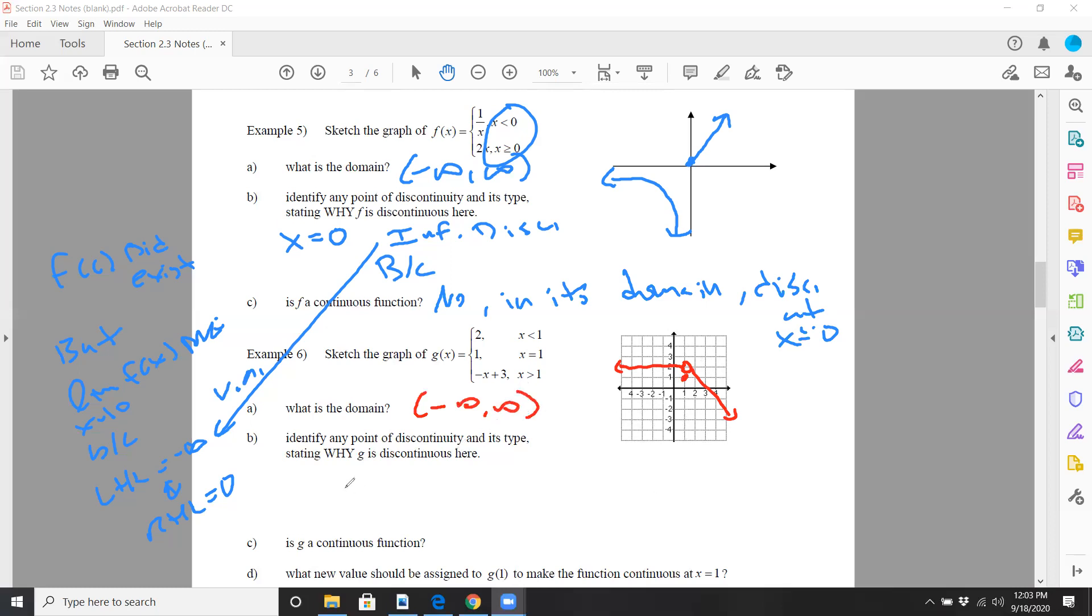Now in this case we have, at x equals one, we have discontinuity, and we call that a removable discontinuity. So again, f of c existed.